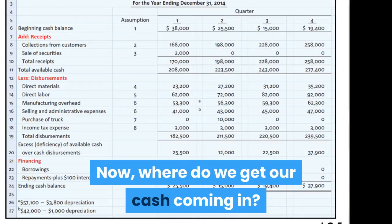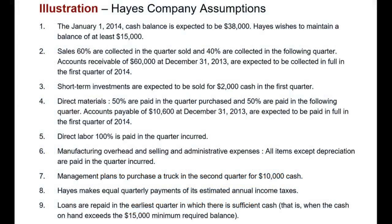Where do we get our cash coming in? Well, from sales — cash sales, but then we also have credit sales. From experience, management knows that 60 percent of sales are collected in the quarter in which the sales occurred, and 40 percent are collected in the following quarter. We're starting the year off with accounts receivable of $60,000 from the year before, and that is expected to be collected in full.